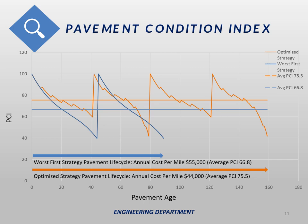On this slide is a graph that compares PCI versus time. The purpose is to show the value of maintenance, specifically of our mill and overlay projects. The mill and overlay is the most cost-effective project type we are able to do. The graph compares two scenarios: a street with no mill and overlay maintenance and a street with mill and overlay maintenance. The blue line is a street with no mill and overlay maintenance — it starts at a PCI of a hundred and over time decreases.